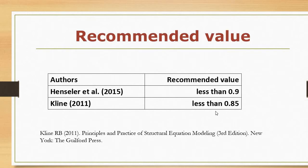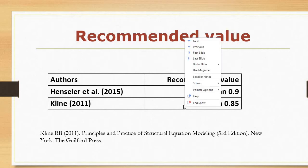Coming to the interpretations: if the value of HTMT falls below 0.9, Henseler argues that discriminant validity is established. However, Klein and some other authors have suggested the value of HTMT should be less than 0.85. Now the question is how to calculate these values — let me give a small demonstration.